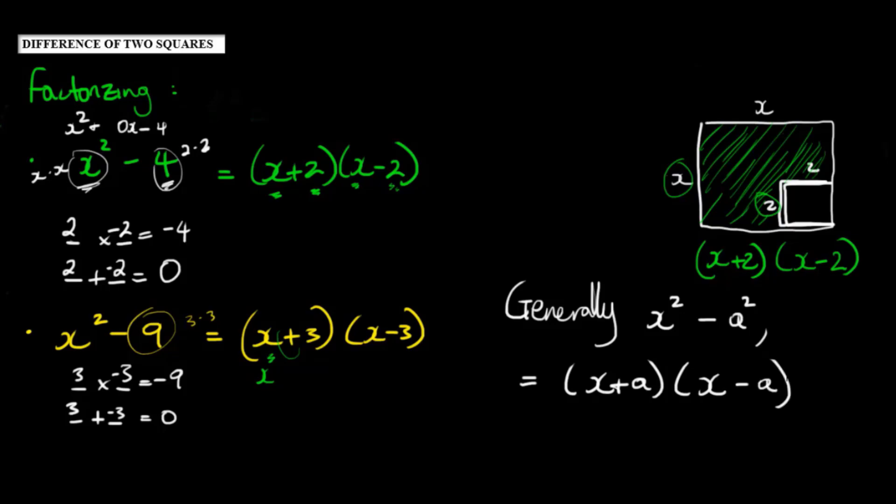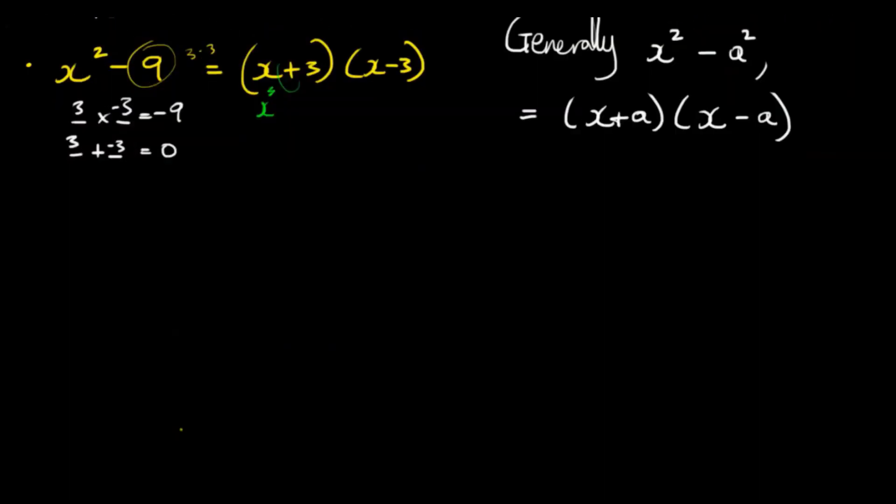Now here's something very important to keep in mind. We can only do this with the difference of two squares. So if we saw something like x squared plus a squared, then we could not apply the same idea.